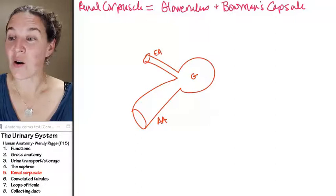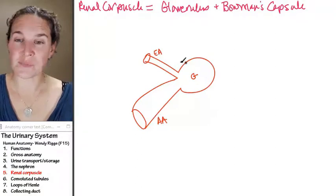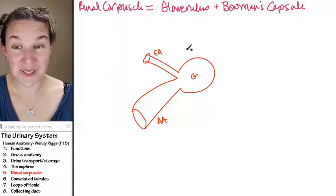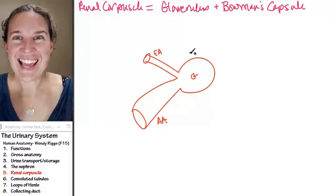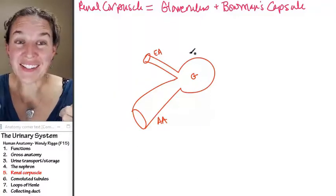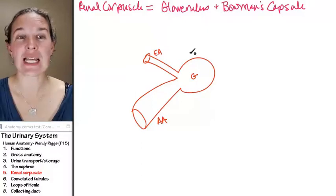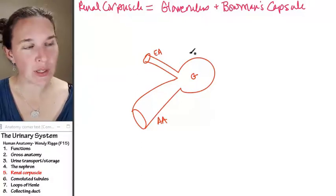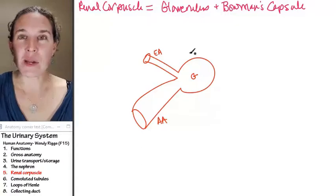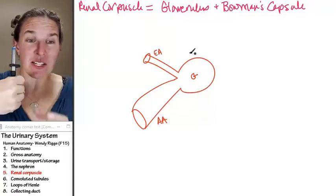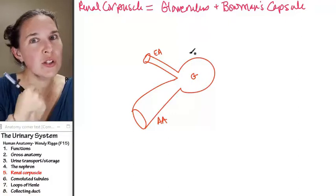Now we have to draw Bowman's capsule. Bowman's capsule is a double-layered structure. You can imagine Bowman's capsule is like a balloon. And the glomerulus is a net of capillaries that were punched into the balloon.